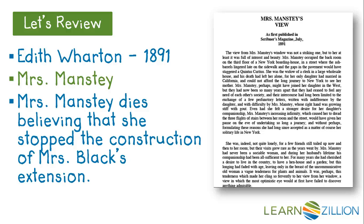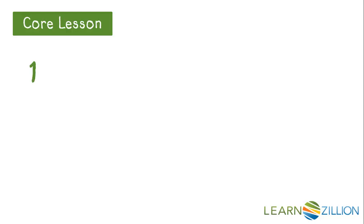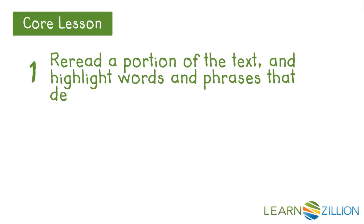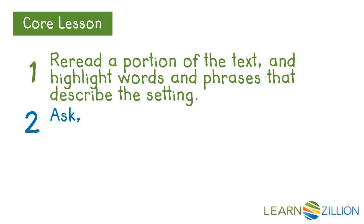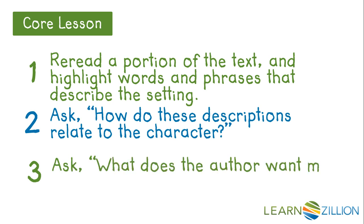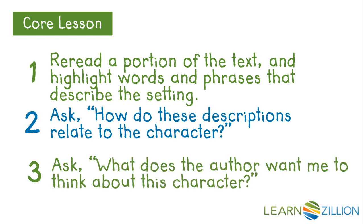In order to do this, we are going to follow three steps. First, we will re-read a portion of the text and highlight words and phrases that describe the setting. Then, we will ask ourselves, how do these descriptions relate to the character? And finally, we will ask, what does the author want me to think about this character?